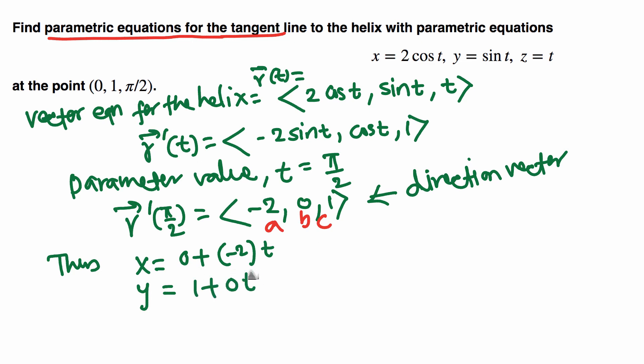That is, we can simplify this: x = -2t, y = 1, and z = π/2 + t.